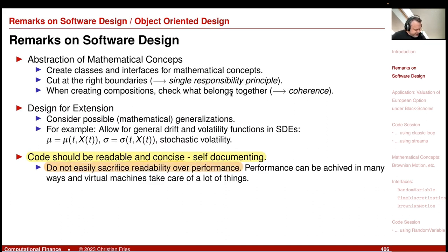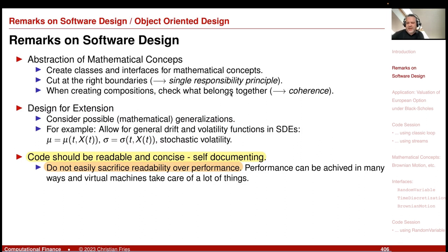Sometimes you think that writing a more self-documenting program is slower, but performance can be achieved in many ways. Using Java, the Java virtual machine does a lot of optimization under the hood. Sometimes you can write things in a way that looks less performant, but in the end it's as performant as the cryptic, fast version would be.